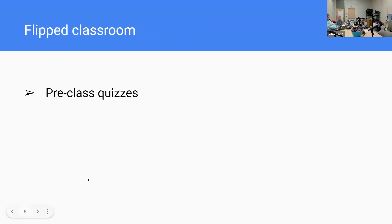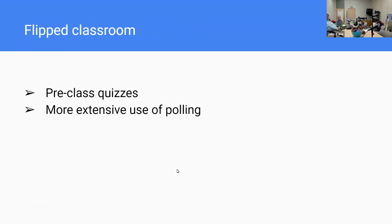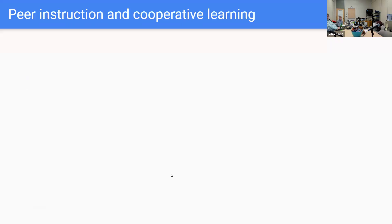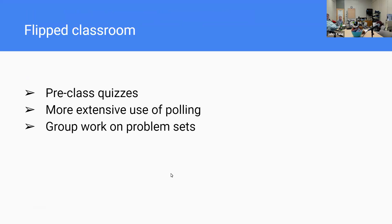A little bit more interactive is a flipped classroom, where typically you have some pre-class quizzes, you often use polling in some form, and group work on problem sets. In this case you've got a bit more active engagement. I do pretty much all these things in my classes, and the group work on problem sets can be really helpful because you have that peer discussion, peer feedback, and peer explanation.